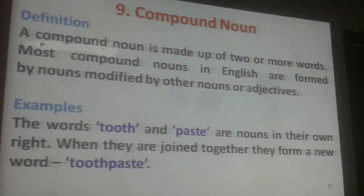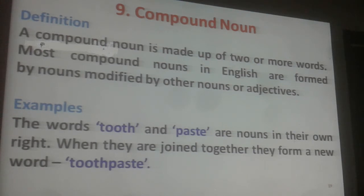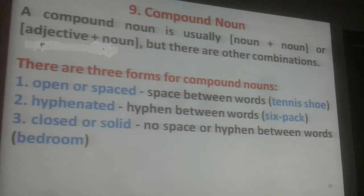Compound Nouns: A compound noun is made up of two or more words. Most compound nouns in English are formed by nouns modified by other nouns or adjectives. For example, the words tooth and paste are nouns in their own right; when they are joined together, they form the compound word toothpaste. A compound noun is usually Noun plus Noun.